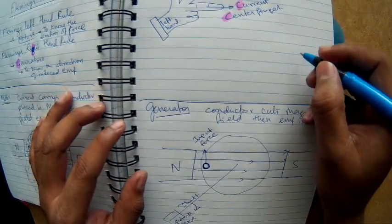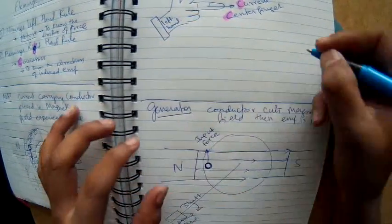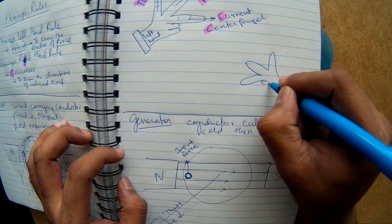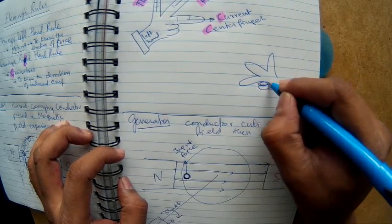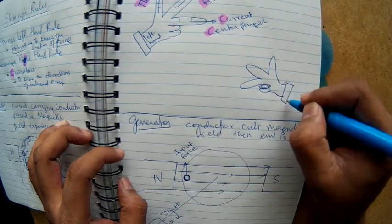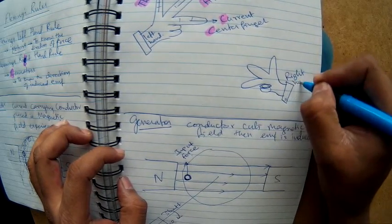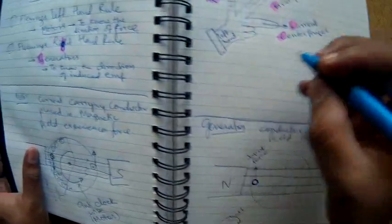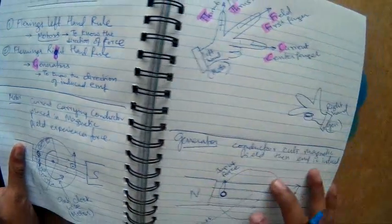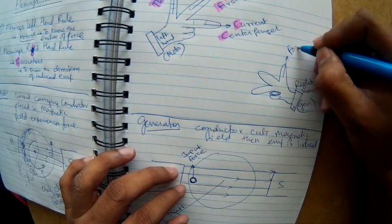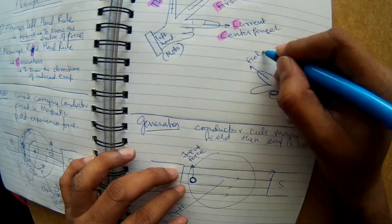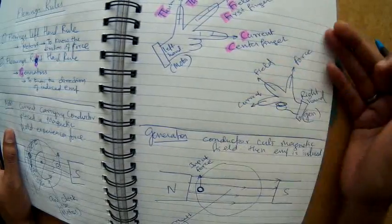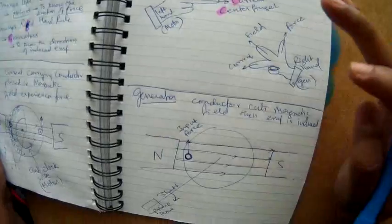Let me draw the right hand: first finger, second finger, and then the other fingers. The right hand is used for the generator, just as the left hand is used for the motor. The notation is exactly the same — thumb represents force, first finger represents field, and middle finger represents current.